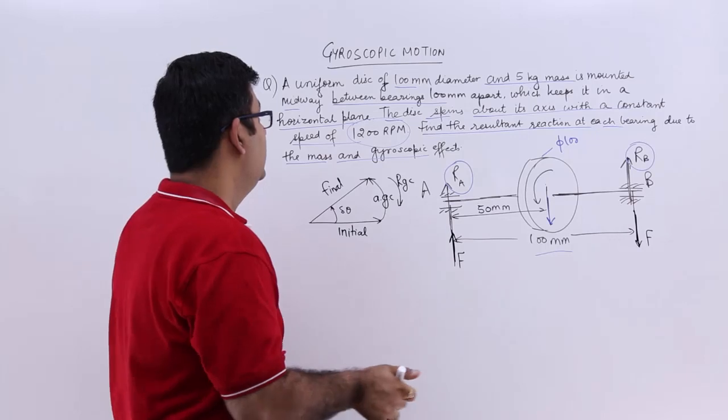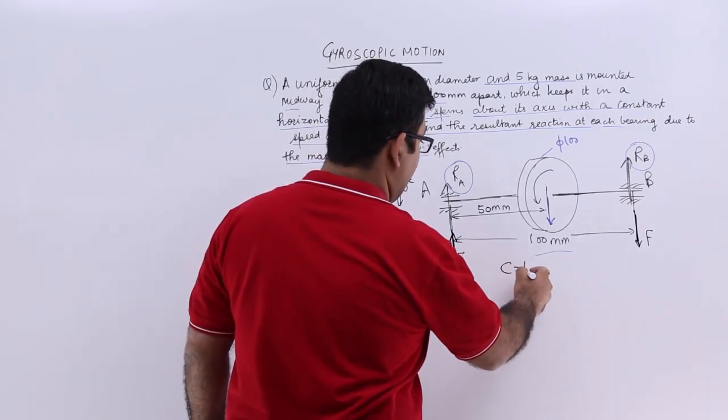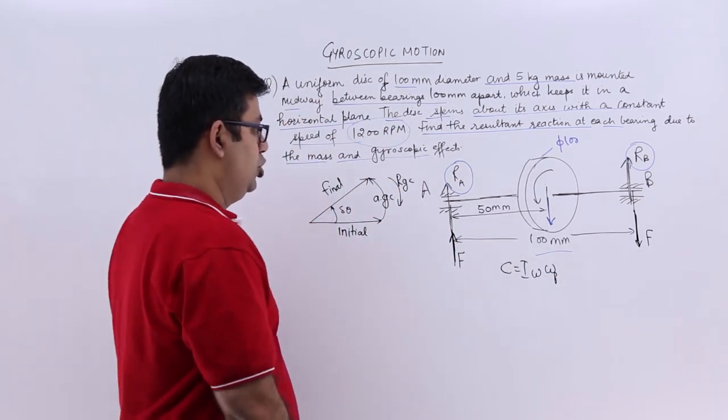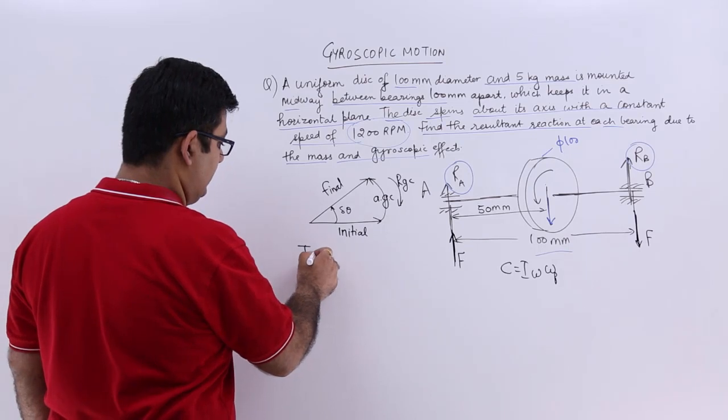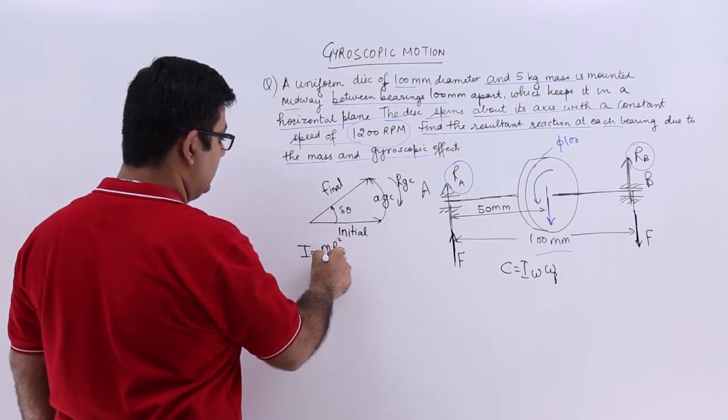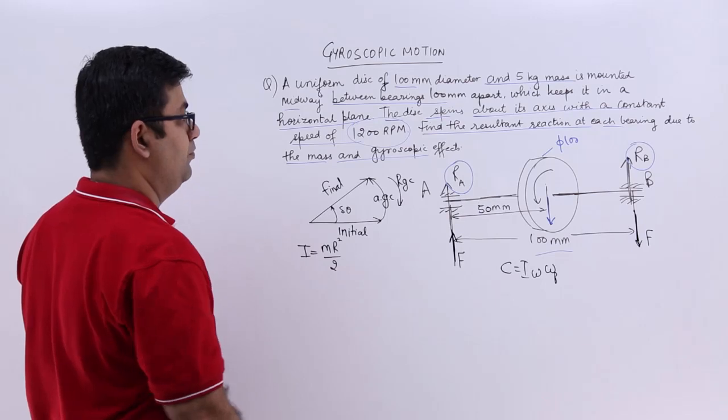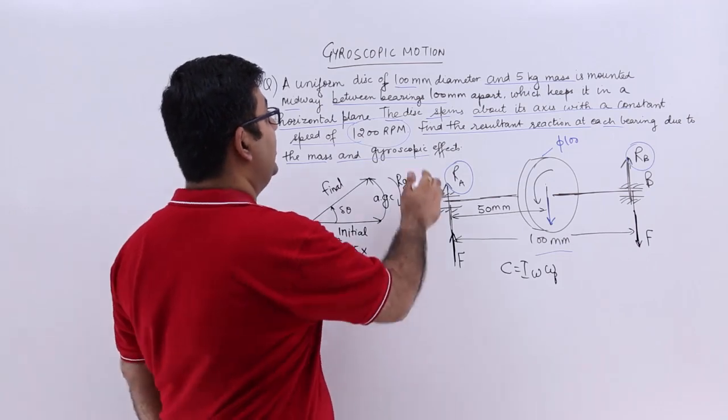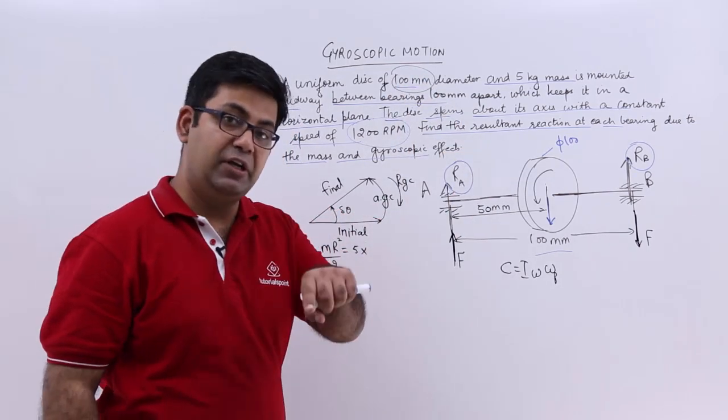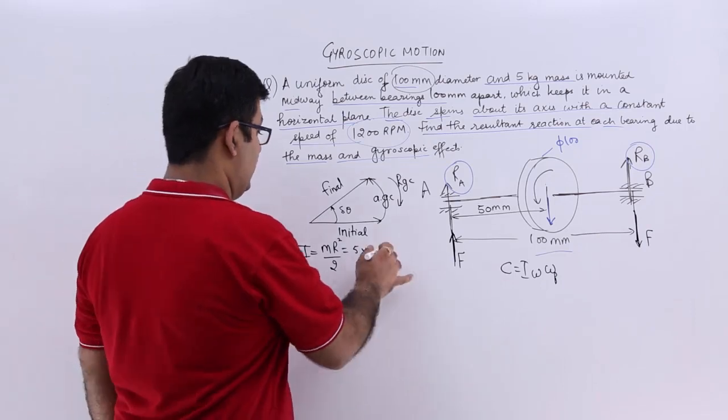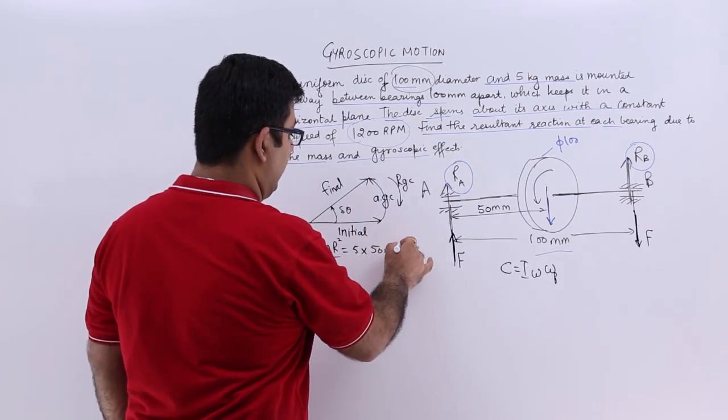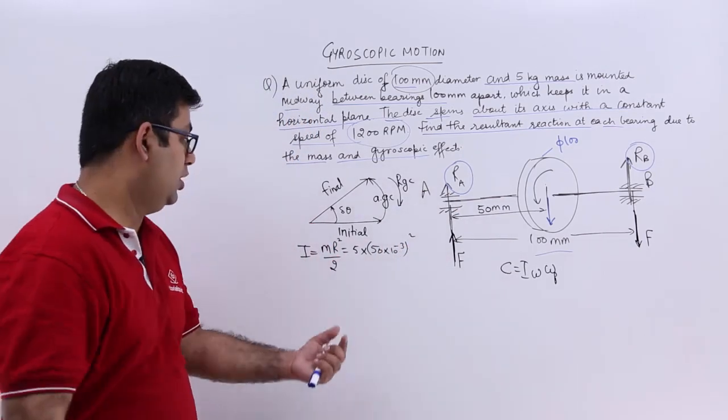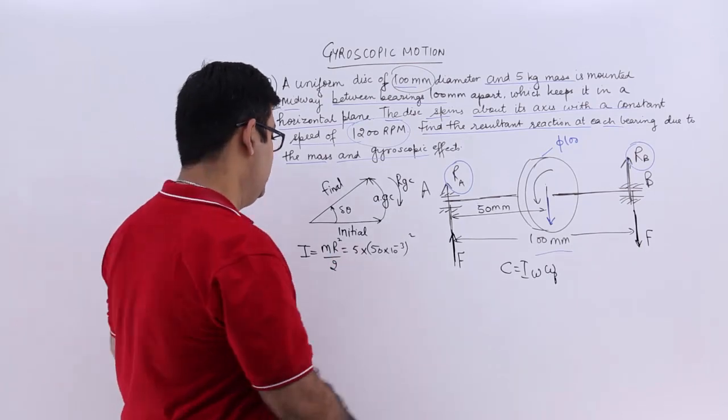Let's find out omega first of all, because for gyroscopic couple you need I, then you need omega, and then you need omega_p. So I is M × R² / 2. You have M = 5, R is 50 millimeters. In meters you will write down 50 × 10^-3 whole square. This is your moment of inertia and you divide this by 2 and you get 0.00625 kg·m².